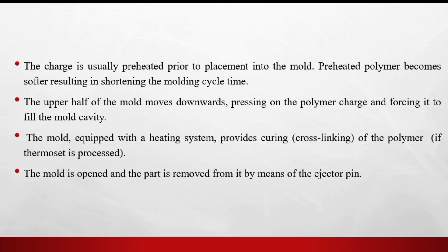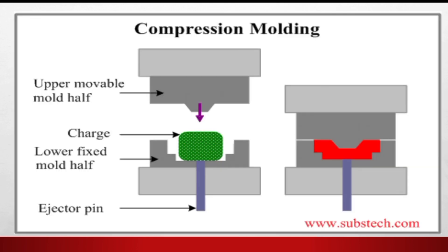The movable upper mold presses downward and this pressure fills the mold cavity to form the desired product. Then the mold is opened and the product is removed using an ejector pin. The diagram shows the fixed lower mold at the base.